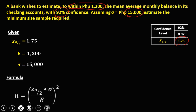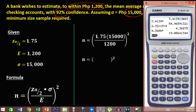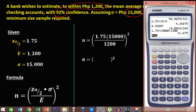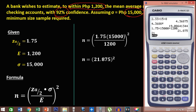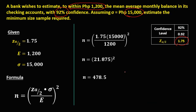To solve for the sample size, it's the square of 1.75 times 15,000 divided by 1,200. We have 1.75 times 15,000, then divide by 1,200, which gives 21.875. Then take the square: 21.875 squared gives 478.5. Rounding up, the sample size is 479.